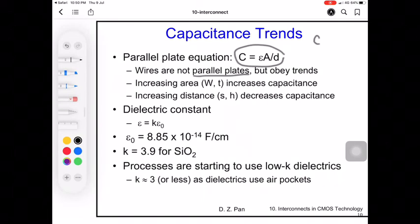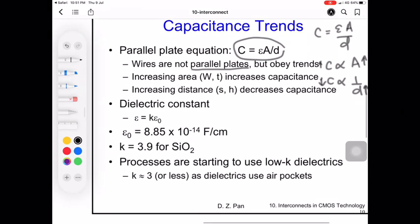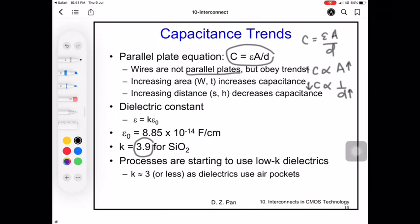Capacitance in wires is similar to parallel plate capacitors with the formula C equals epsilon A over D. C is proportional to A - if you increase the area, capacitance increases. C is inversely proportional to D - if you increase the distance between two parallel plates, capacitance decreases. The dielectric constant is 3.9 for silicon dioxide, which is normally put between metal layers in CMOS to isolate them.